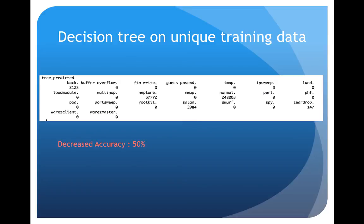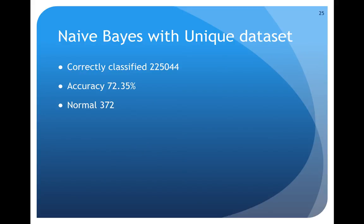I tried running decision tree for the unique training data but I actually got decreased accuracy. My accuracy was decreased by 50 percent. Naive Bayes did comparatively better with the unique dataset. Now its accuracy this time was 72.35 percent as opposed to 61 percent last time. It also identified more normal records correctly.